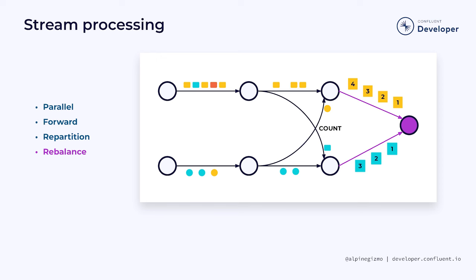At the right-hand side of the diagram, you see the results of the count operation streaming toward the sink. For yellow events, a total of 1, then 2, then 3, and now 4 events have been processed. For blue events, the count has progressed from 1 to 2 and then to 3. Instead of having each instance of the count operator forward its results to two parallel sinks, I've chosen to change the parallelism so there's only one sink. This is accomplished by a stream operation called rebalancing, which means the event streams are redistributed in a round-robin fashion, merging the streams at the sink.